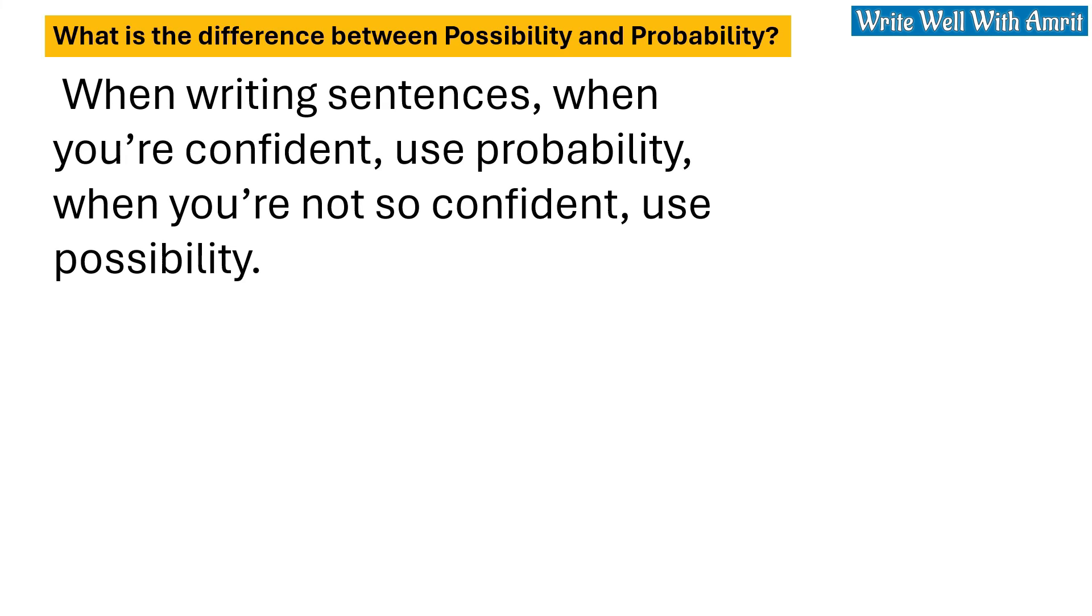When writing sentences, when you are confident, use probability. When you are not so confident, use possibility.